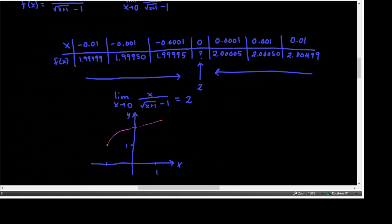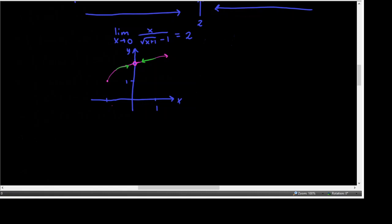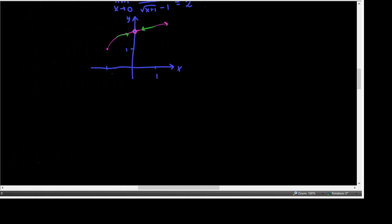So the graph looks sort of like this. When x is 0, there is no value. Since it's approaching 2 from the left side and the right side, we can put an open circle there to represent the fact that as x gets closer and closer to 0 from the left, it's approaching 2, and closer and closer from the right, it's approaching y = 2. At 0 there actually is no value, but we put an open circle at (0, 2), representing that as x gets closer and closer to 0 from both sides.